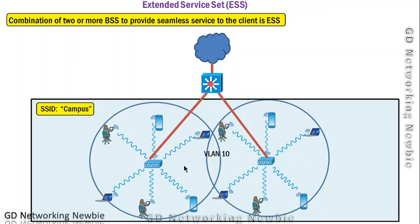In an extended service set, all clients supported by different access points can see the same SSID. Whether they are on the ground floor or the first floor, they will see the same SSID. You may have experienced this in a multi-story building where you see the same network name on different floors — this is made possible by using multiple access points.